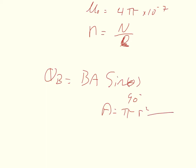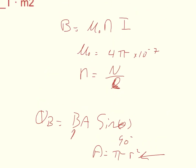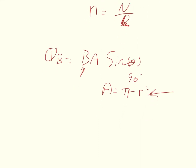Be sure to convert your radius into SI units of meters. The magnetic field — we can just substitute the equation we had for Part A right into the flux formula. So the magnetic flux equals the permeability of free space times the turn density times the current times pi r squared, that's the area, times the sine of 90.